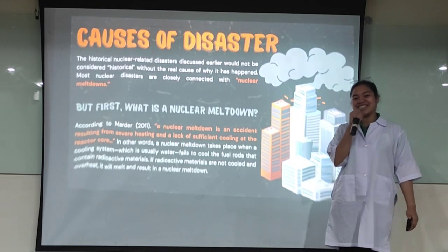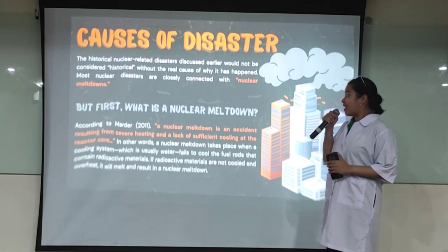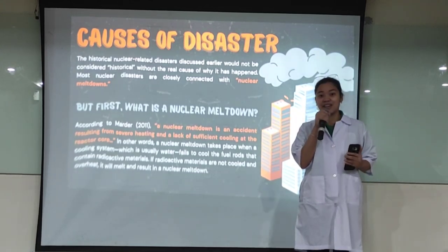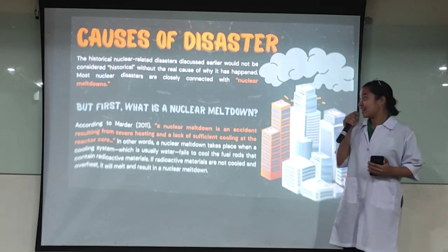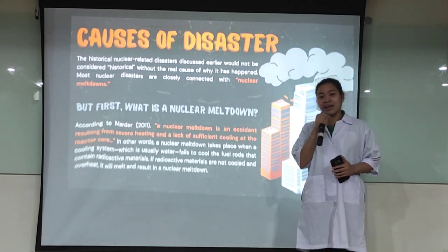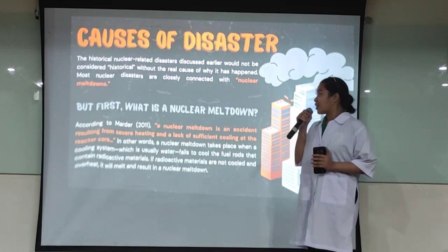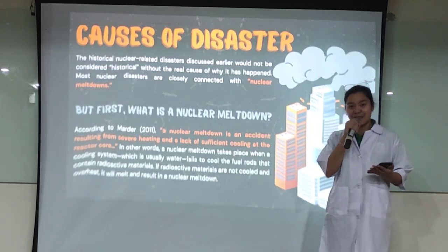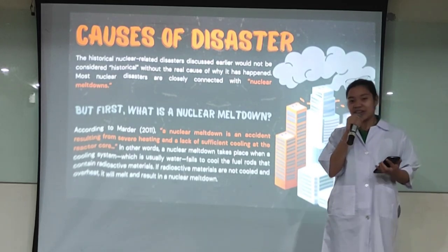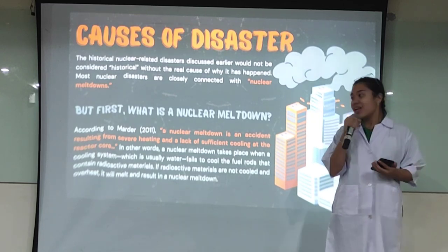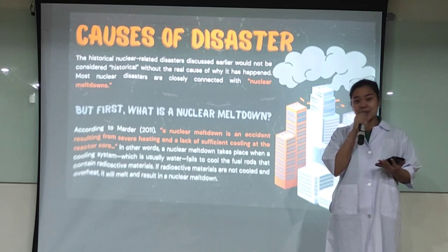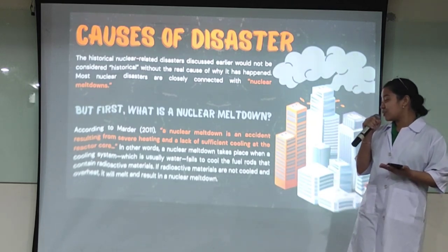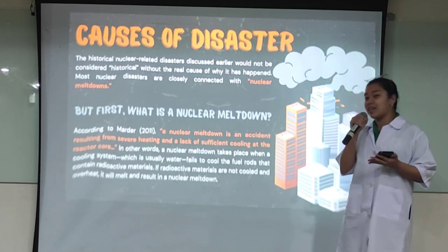Hello everyone, I am Dr. Janelle, and I am here to present what causes nuclear disasters. The historical nuclear-related disasters discussed earlier would not be considered historical without understanding the real cause of why they happened. Most nuclear disasters are closely connected with nuclear meltdowns. According to Warner (2011), a nuclear meltdown is an accident resulting from severe heating and a lack of sufficient cooling at the reactor core. In other words, a nuclear meltdown takes place when a cooling system, which is usually water, fails to cool the fuel rods that contain radioactive materials. If radioactive materials are not cooled and overheat, they will melt and result in a nuclear meltdown.